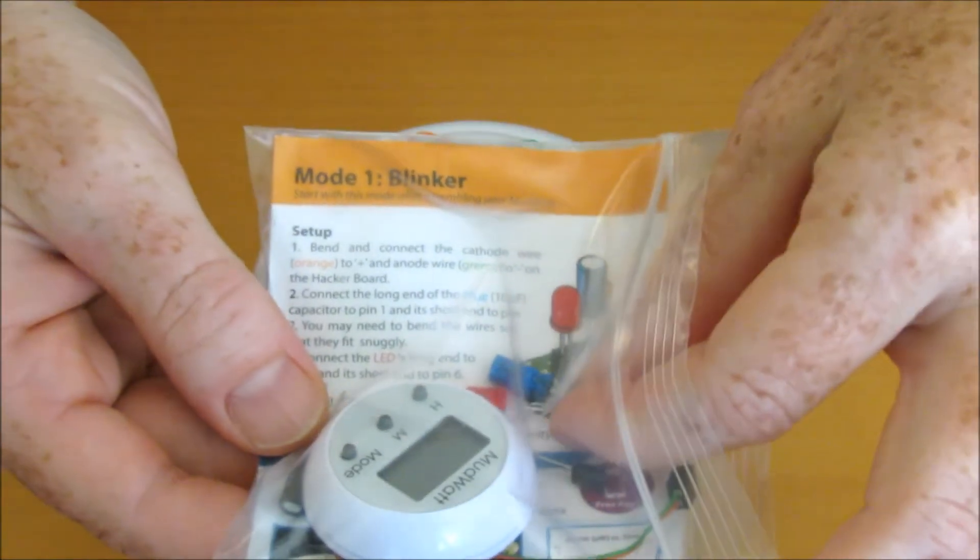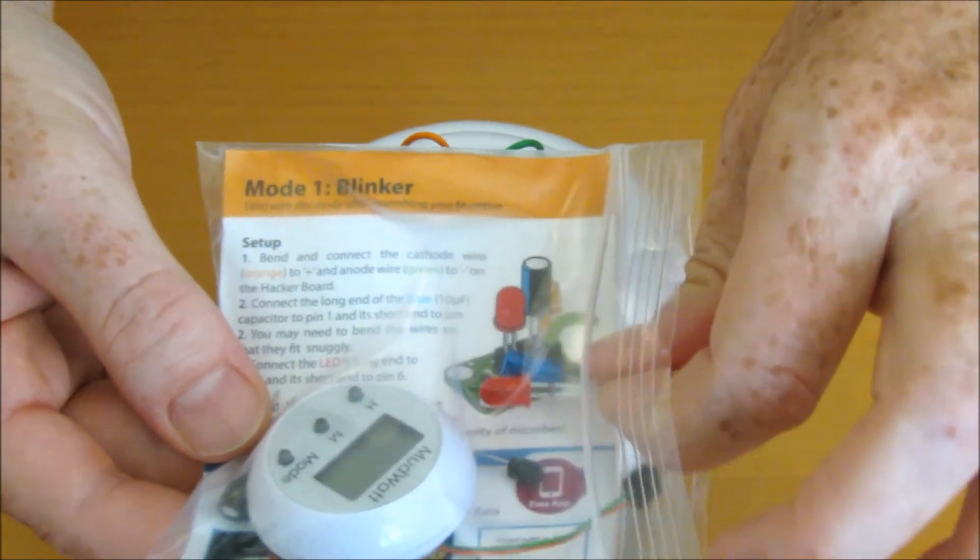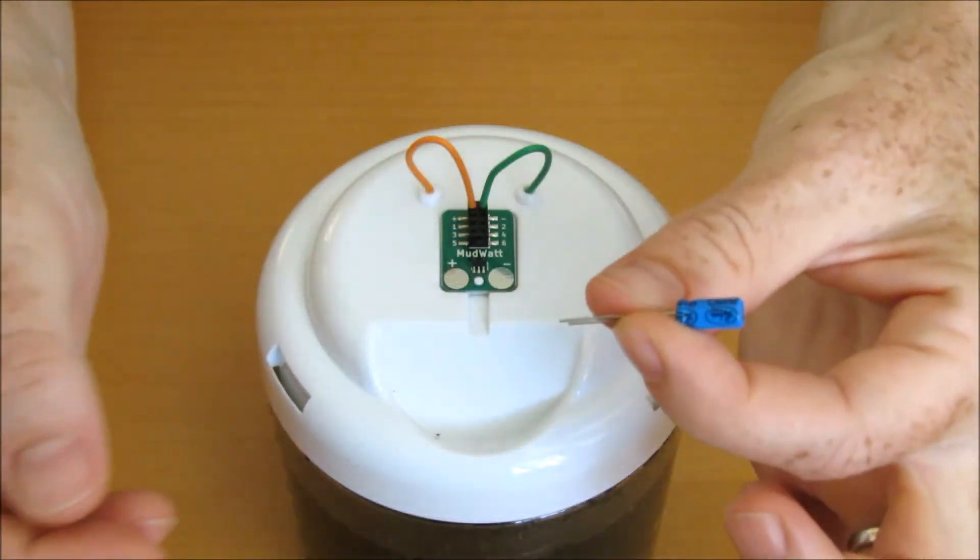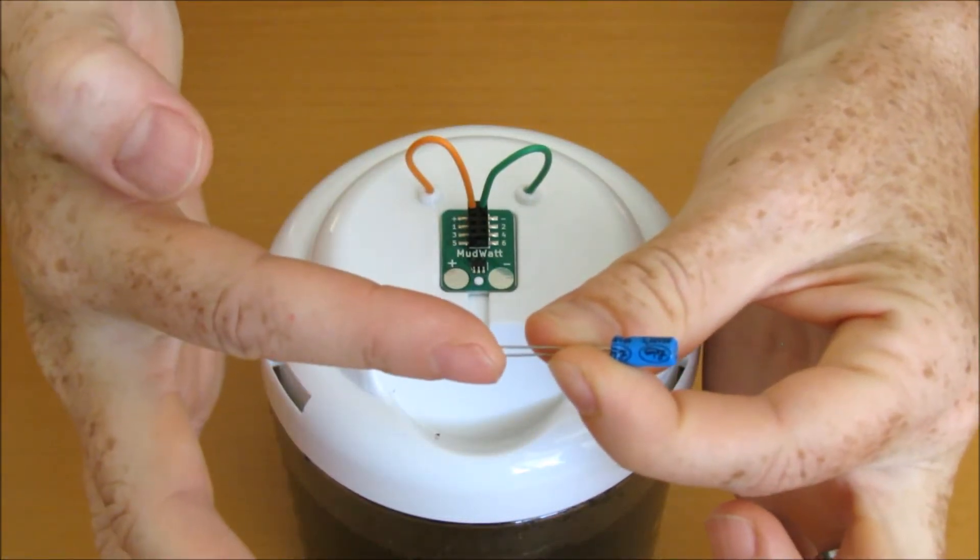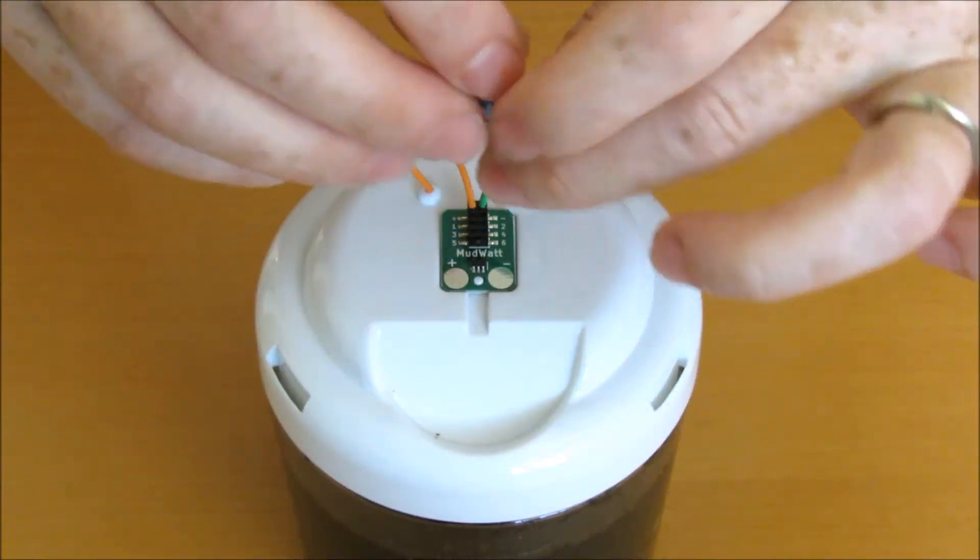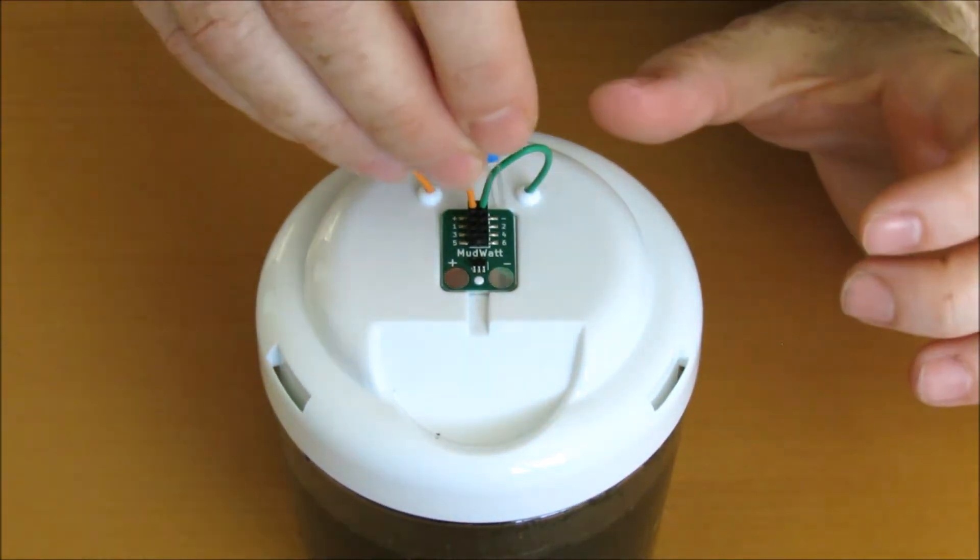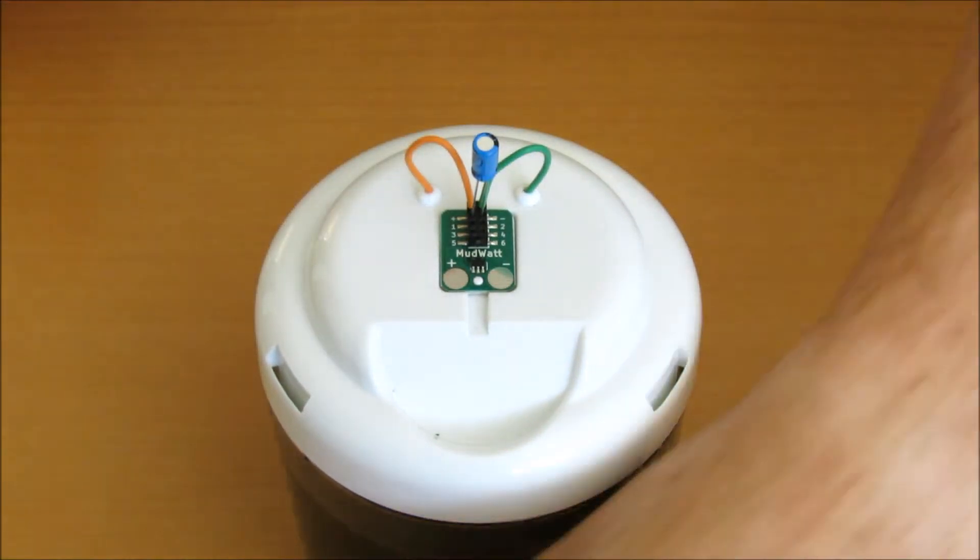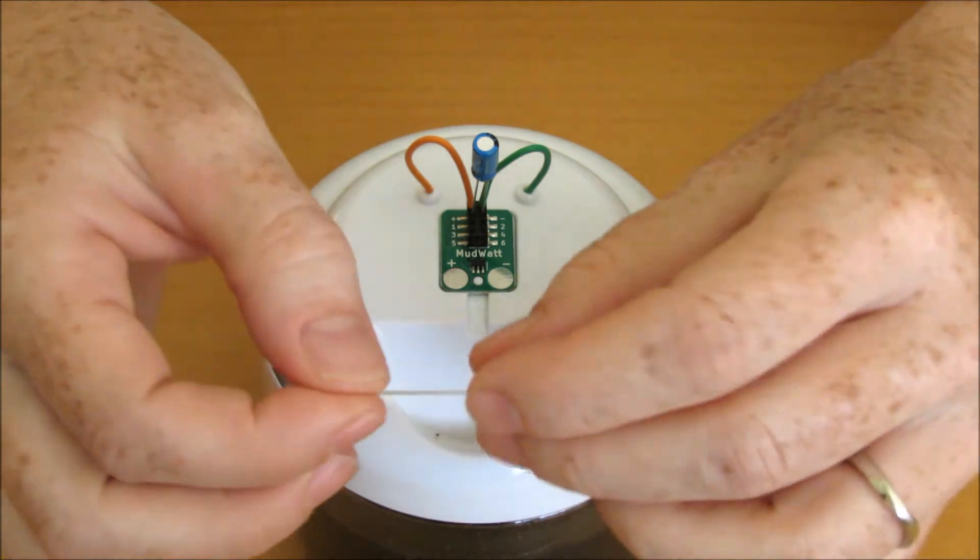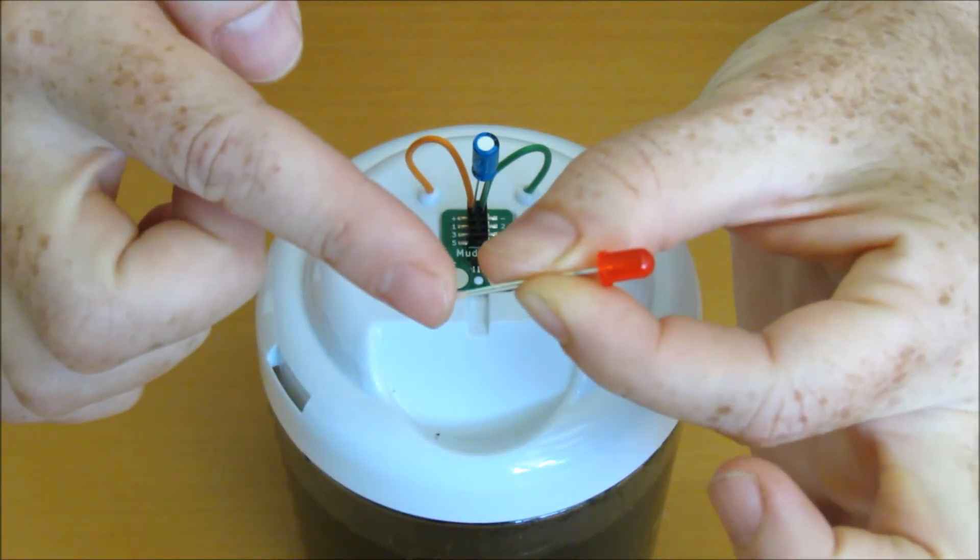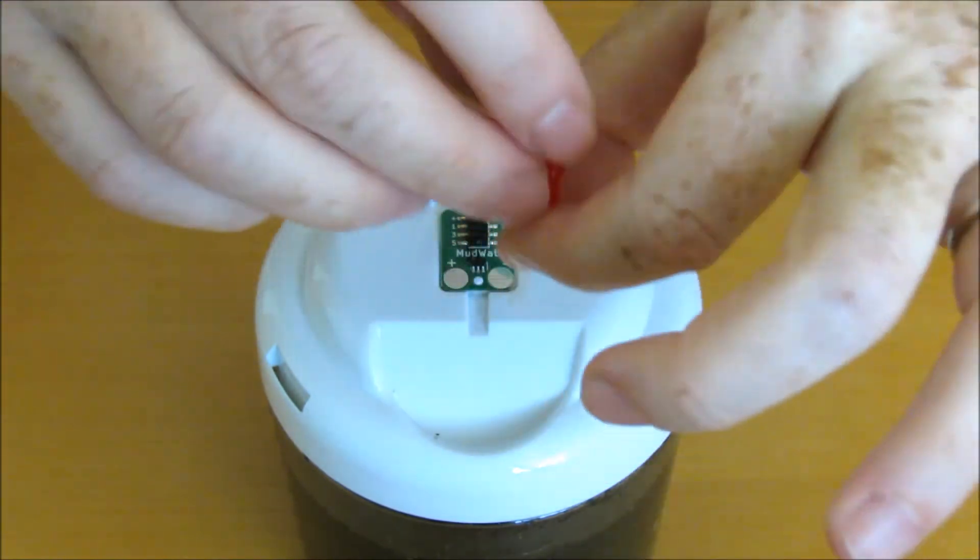We'll need the blue capacitor and the red LED from the hacker pack. Insert the long end of the blue capacitor into pin 1 and the short end into pin 2. Insert the long end of the red LED into pin 5 and the short end into pin 6.